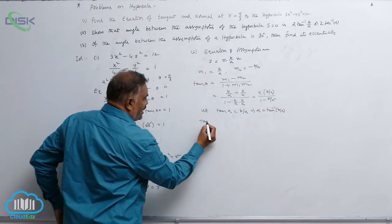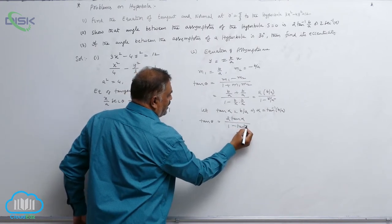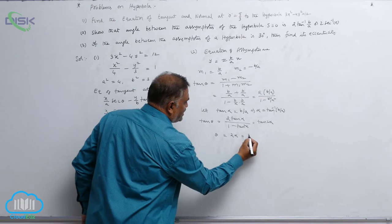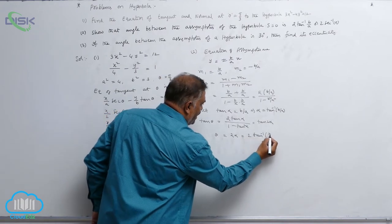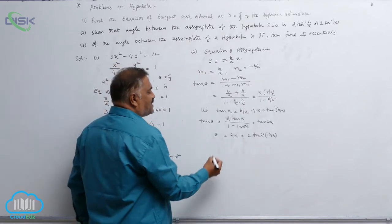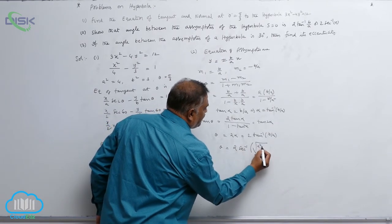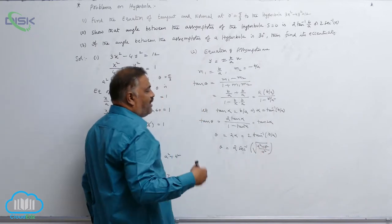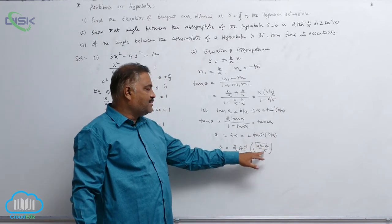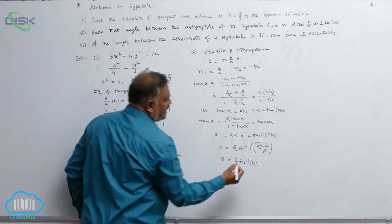Then tan theta equals 2 tan alpha divided by 1 minus tan² alpha, which is nothing but tan 2 alpha. So theta equal to 2 alpha equal to 2 tan⁻¹(b/a). Converting tan⁻¹ in terms of secant gives 2 sec⁻¹ of square root of (a² plus b²) divided by a². Since root of (a² plus b²) over a² equals e, we get theta equal to 2 sec⁻¹(e).